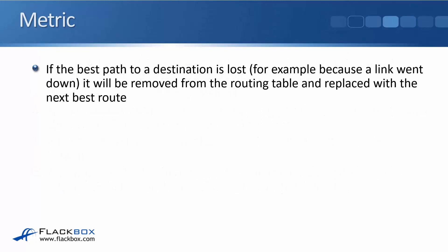If the best path to a destination is lost — for example, because a link went down — it will be removed from the routing table and replaced with the next best route, the route that has the next best metric if one is available. This is a big advantage of dynamic routing protocols: they're self-healing. If anything changes on the network, the routing tables will be updated to reflect that.